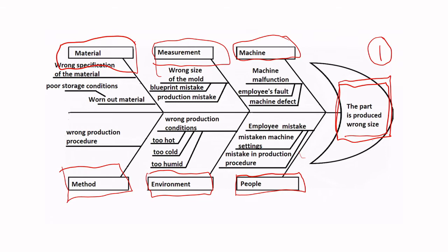You may need to probe deeper. Under environment, for example, we've got wrong production conditions — is it too hot, too cold, too humid, too dusty? All sorts of environment conditions can be brainstormed. Within your quality circle, you can do a quick intuition or gut check and figure out which of these, from a priority perspective, you should go and evaluate first. Conversely, you could have already collected data with check sheets, histograms, or Pareto charts and apply this diagram from a prioritization perspective.